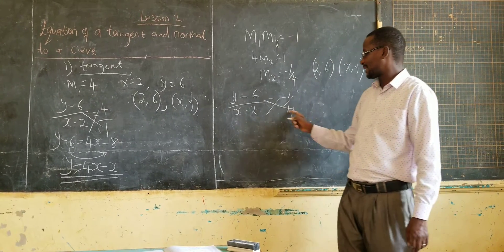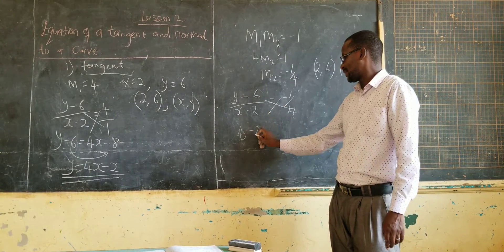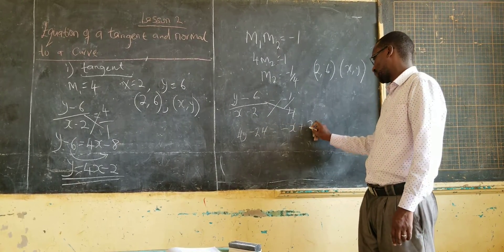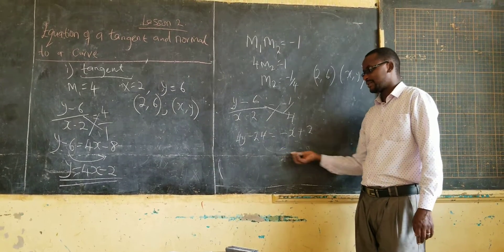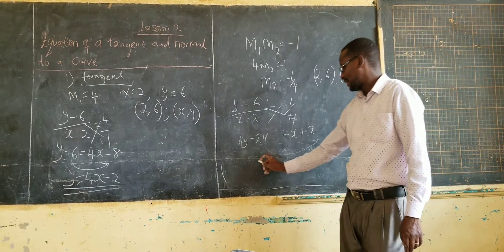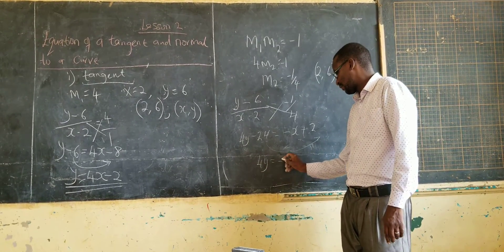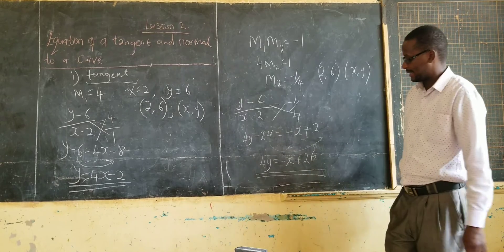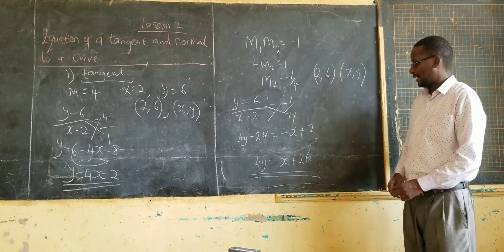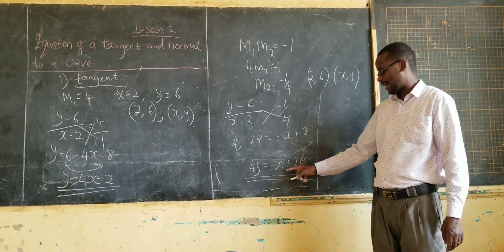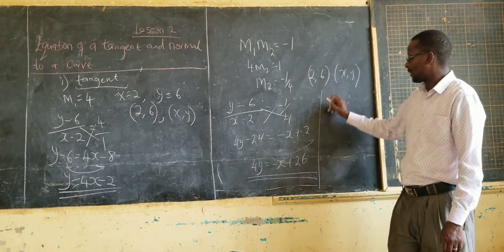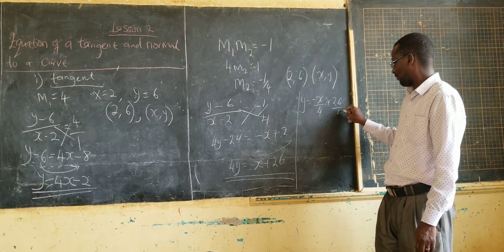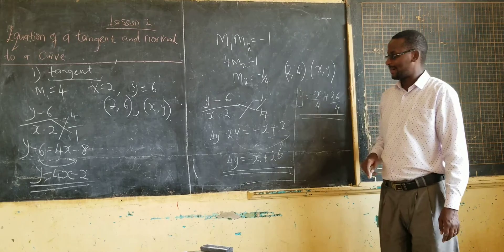Cross-multiplying, we get 4y minus 24 equal to minus x plus 2. Taking minus 24 to the other side, you get 4y equals minus x plus 26. You can leave the equation like that, or if you want to go ahead, you can put it in the form y equal to mx plus c by dividing by 4 throughout. It will be y equal to negative x over 4 plus 26 over 4.